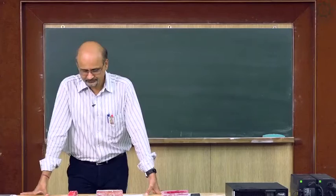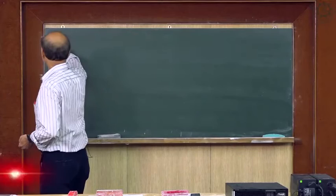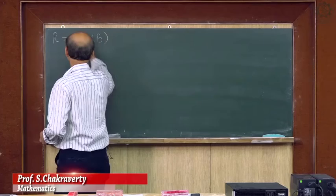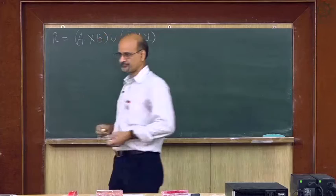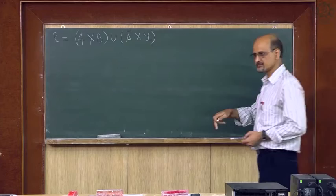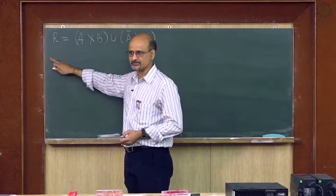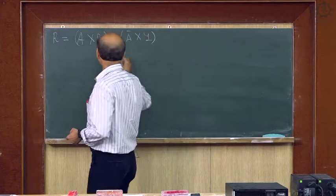In the last class, we covered implication. We defined the relation R as A cross B union A-bar cross Y, where A is given in universal set X and B is in Y. We generated this relation for classical logic.